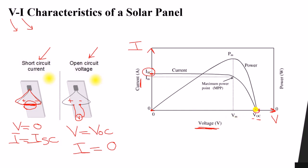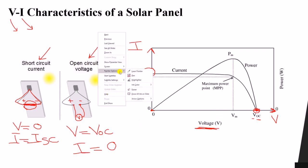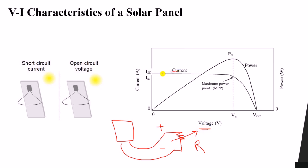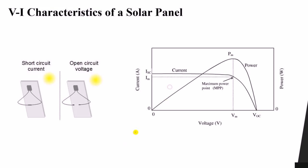Between these two points we want to find different values of current and voltage. We connect the panel — positive and negative — to a variable resistor. By changing the resistance, we can obtain different values of voltage and current. Finally, we can draw the complete VI characteristics curve of the solar panel.